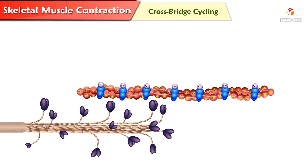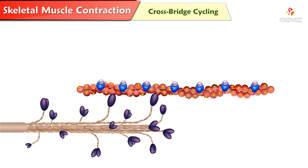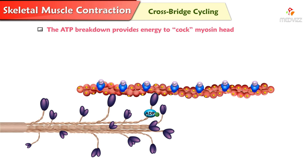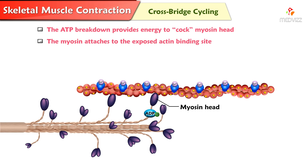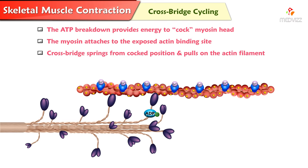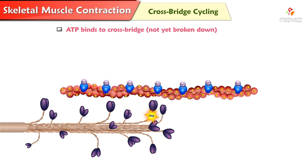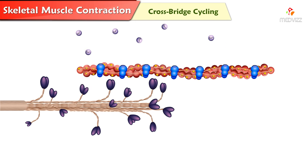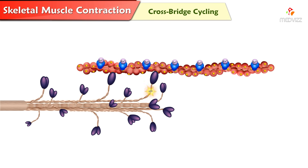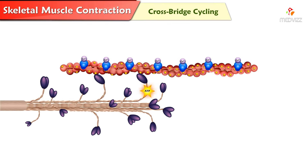Cross-bridge cycling. When calcium ions are present, the myosin binding sites on actin are exposed. The ATP breakdown provides energy to cock the myosin head. The cocked myosin attaches to the exposed actin binding site. The cross-bridge springs from the cocked position and pulls on the actin filament. The cross-bridges break. An ATP binds to the cross-bridge but is not yet broken down. The myosin heads are released from actin. As long as calcium ions are present, this continues until the muscle fiber is fully contracted.